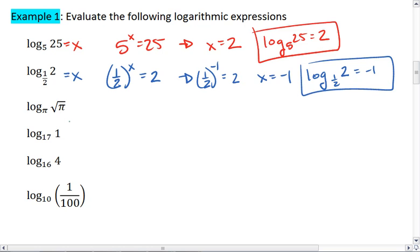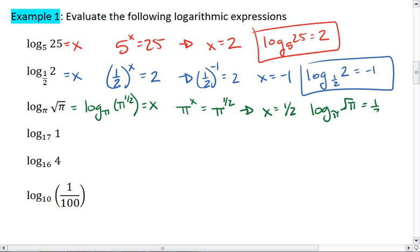Log base π of the square root of π. I'm going to rewrite that as log base π of π to the 1 half, and this equals x. This means π to the x equals π to the 1 half, thus x equals 1 half. Log base π of the square root of π equals 1 half.